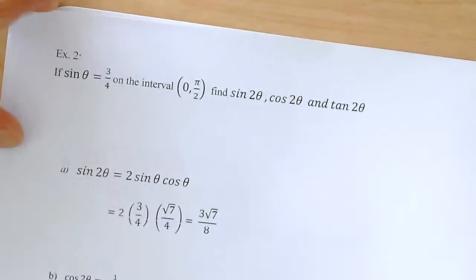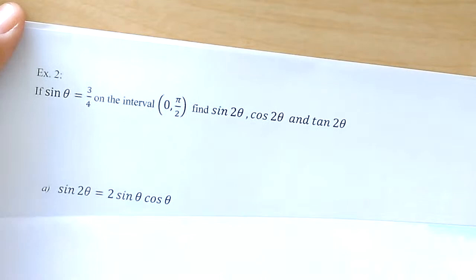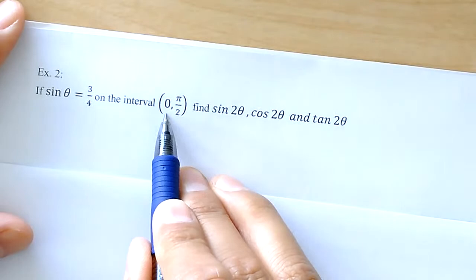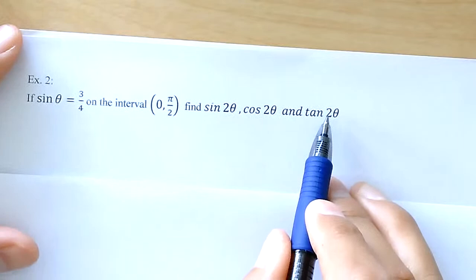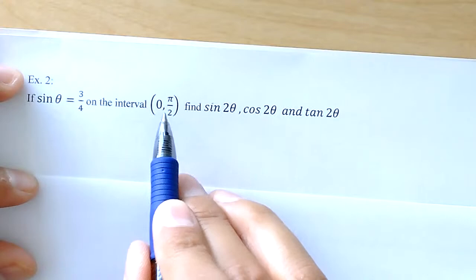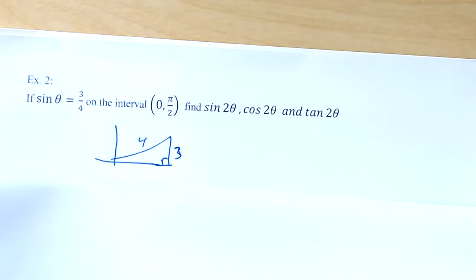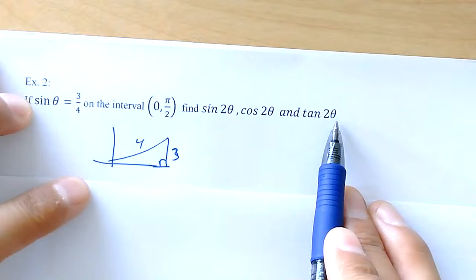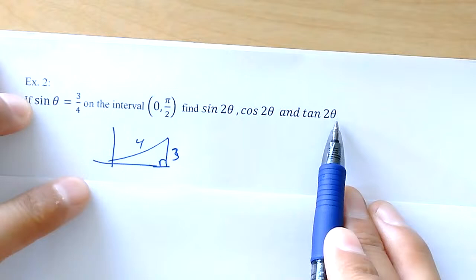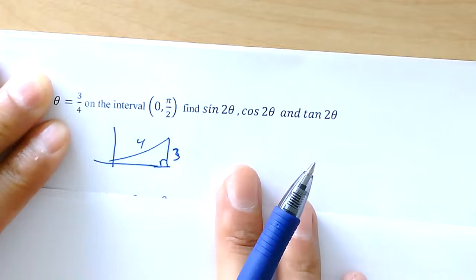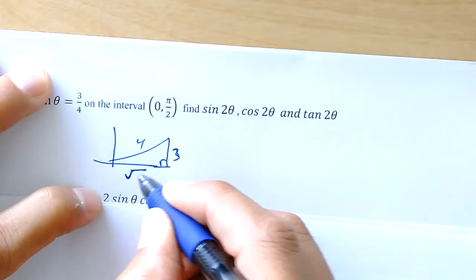For number two, we're given the sine in quadrant 1. Please pause the video and draw that triangle in quadrant 1. The sine is opposite over hypotenuse, and using the Pythagorean theorem the missing piece — the adjacent side — is the square root of 7. Once you have the triangle, you can use it to find all three values.